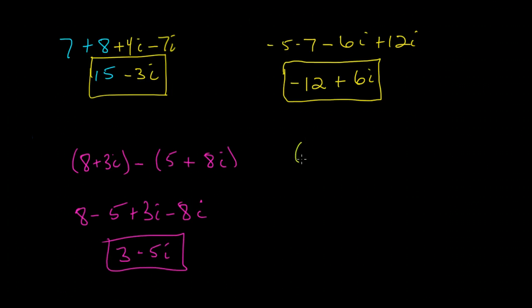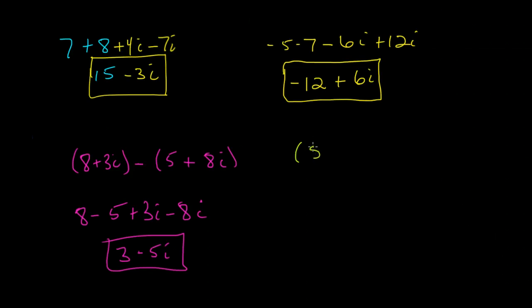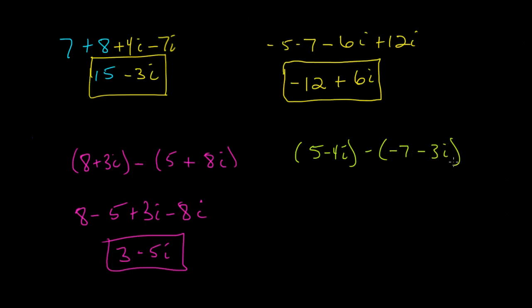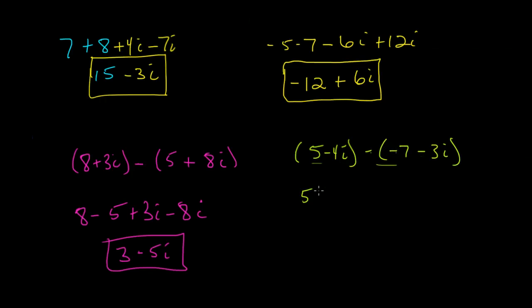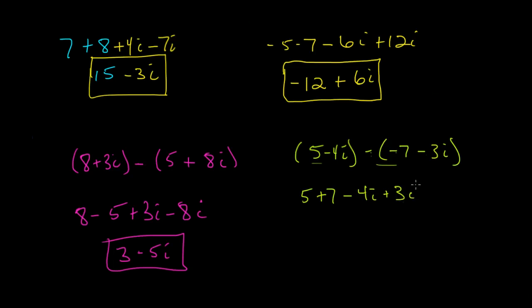Let's go ahead and do one more, also with subtraction. 5 minus 4i, and from that we're going to subtract negative 7 minus 3i. So let's see what that looks like. Again, I want to take my real number parts and put them together. So that'll be 5 minus a negative 7, which is actually plus 7. And that'll be minus 4i minus a negative 3i, which would actually be plus 3i.